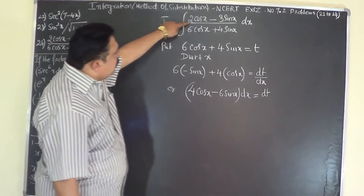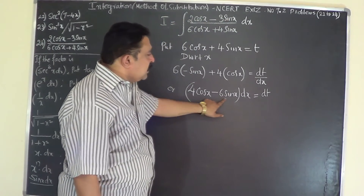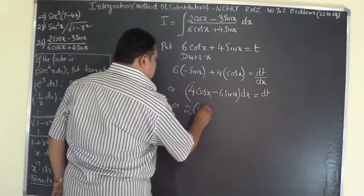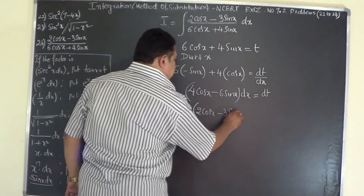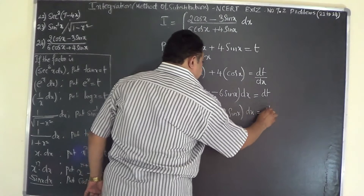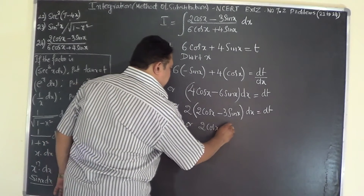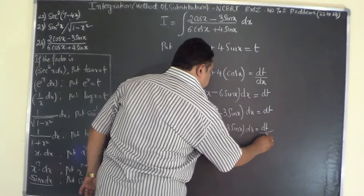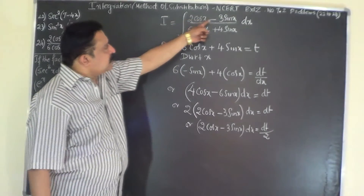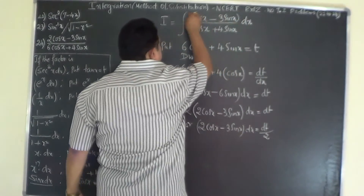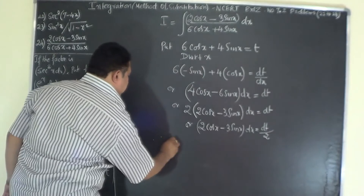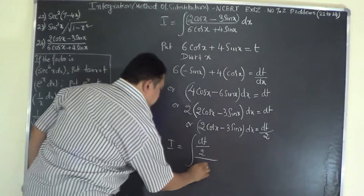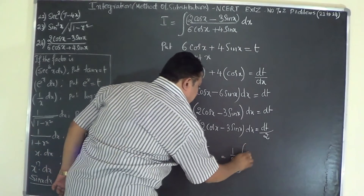In the numerator we have only 2cosx - 3sinx, not 4cosx - 6sinx. Taking 2 common: 2(2cosx - 3sinx) dx = dt, so (2cosx - 3sinx) dx = dt/2. The numerator 2cosx - 3sinx dx is replaced by dt/2. Therefore I = integral of (dt/2) / t = 1/2 × integral of dt/t.